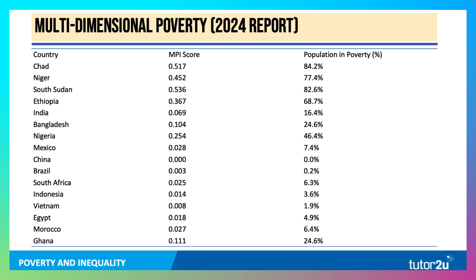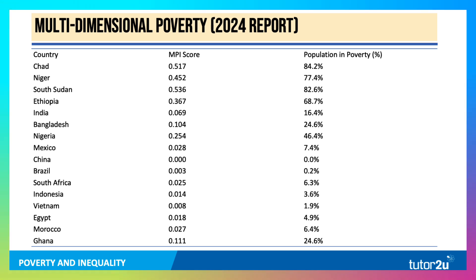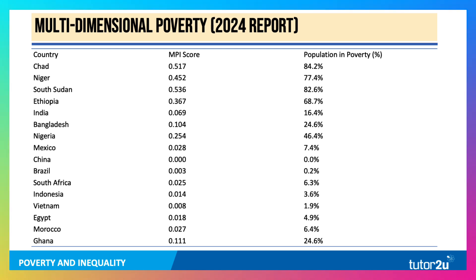According to the Multidimensional Poverty Index 2024 report, in Chad, a high MPI score — over four-fifths of the population living in poverty on this measure. Very high figures also in Niger and South Sudan. India is much lower but still 16%. Nigeria has nearly half the population living in multidimensional poverty. Whereas in China and Brazil, according to this data, a very small percentage of the population. Ghana, 24%.